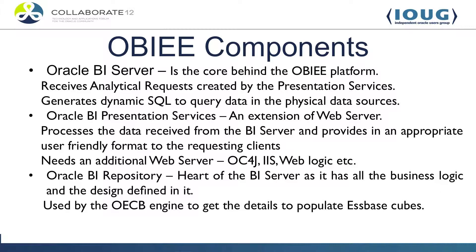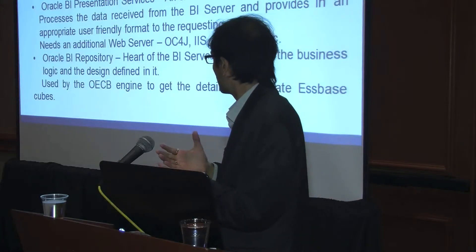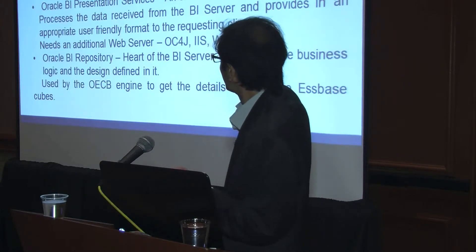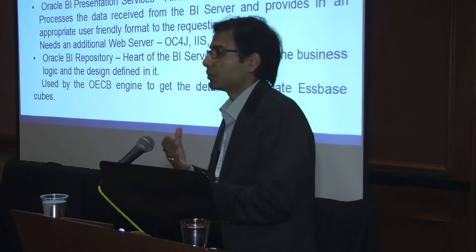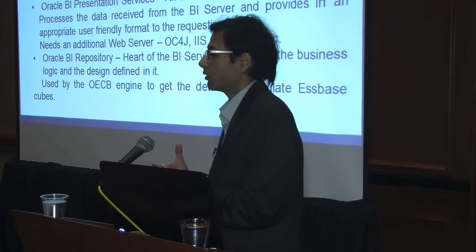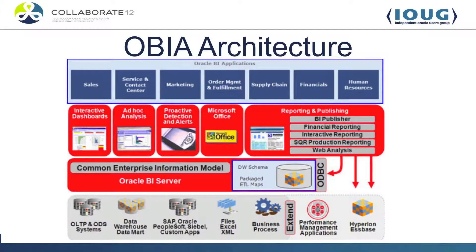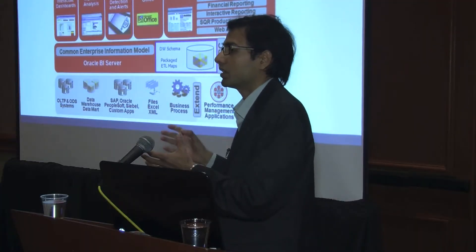The two main components used by Oracle Essbase Cube Builder are your BI Server and your Oracle BI Repository. The cube builder uses the repository to pull in all the metadata, and for Oracle Essbase Cube Builder to generate the data from your data warehouse, it needs your BI Server to be up and running. Here is the Oracle BI Applications architecture — you have a set of modules like sales, service, and marketing. You can use OLTP applications like eBusiness Suite and PeopleSoft, and Oracle BI Applications uses the OBIEE platform.